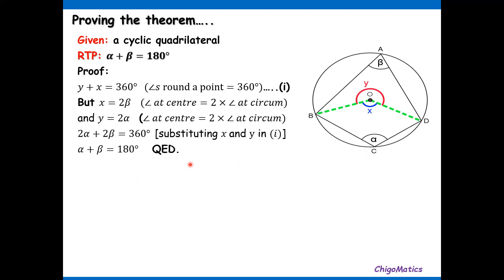Then you divide both sides by two, and you end up with alpha plus beta equals 180. The proof is complete.